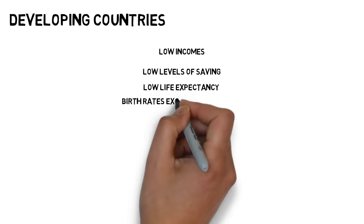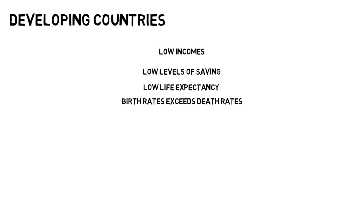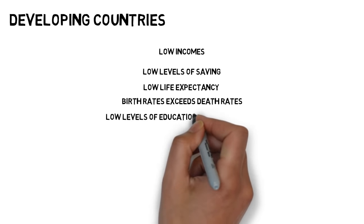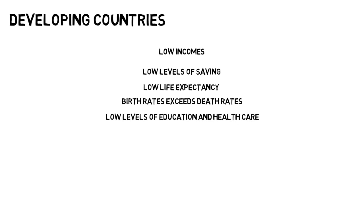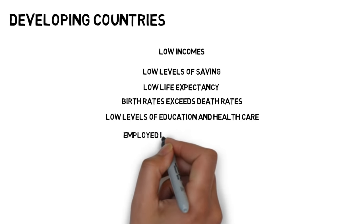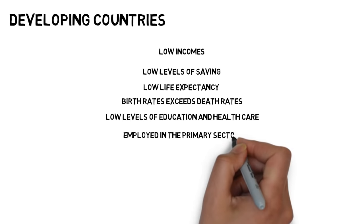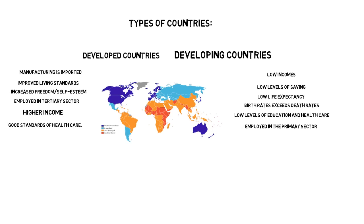In developing countries, there are low levels of savings due to low income, low life expectancy but high rates of population growth. The birth rate exceeds death rates and there is a high dependency ratio, low levels of education and care, reduced productivity, and poor housing. A high number of workers are employed in the Primary sector and manufacturing is recently established and growing. Here is an image showing a map of different countries and whether they are developed or in the process of developing.